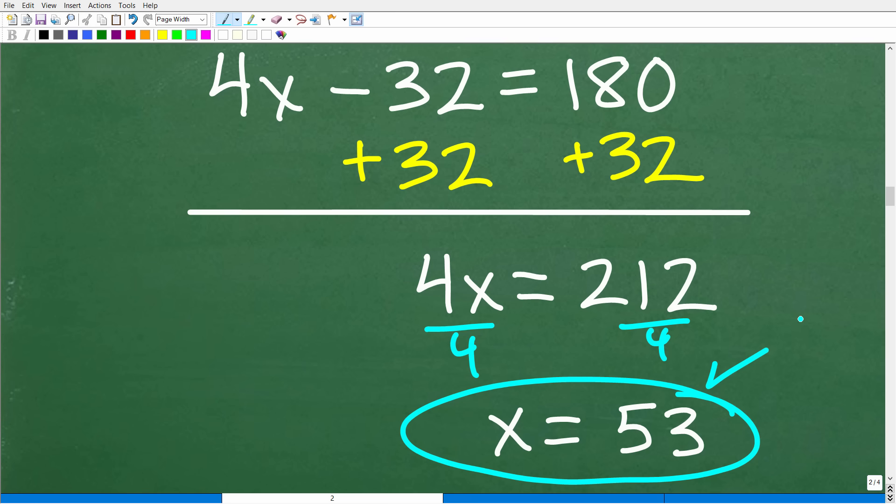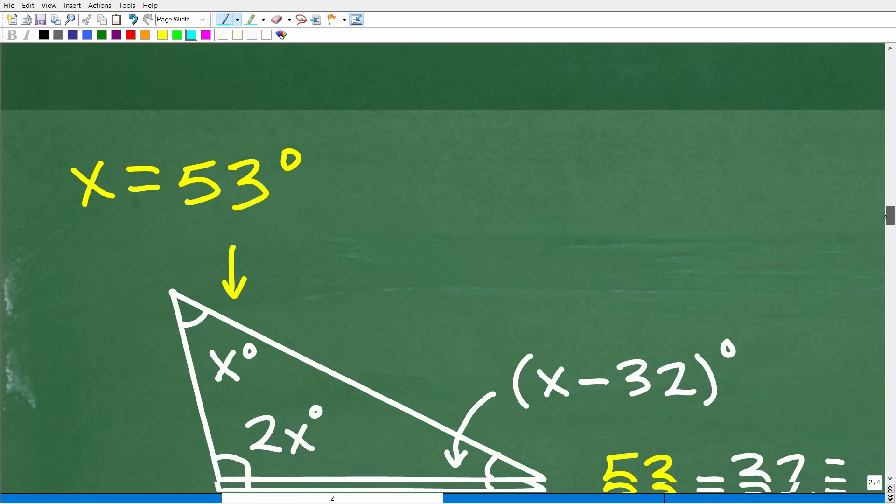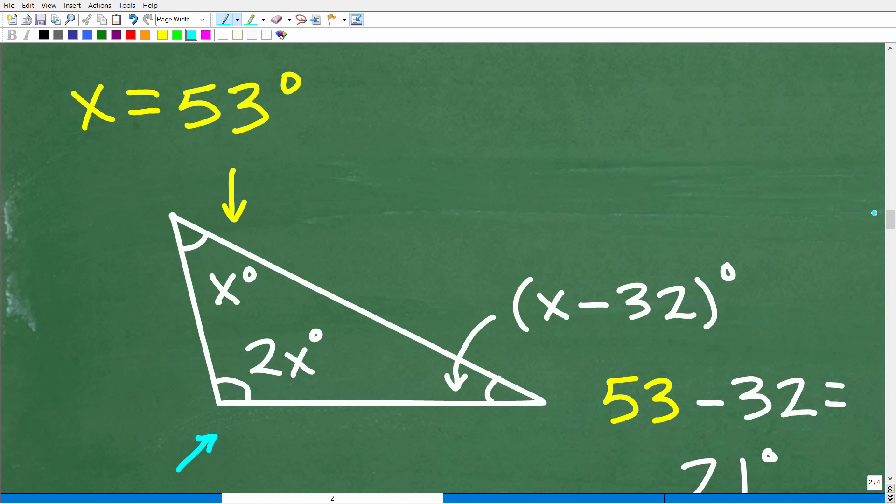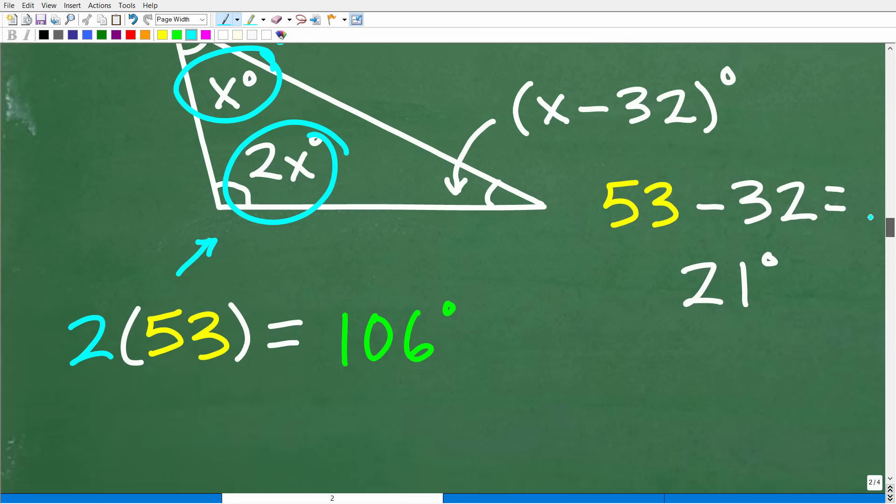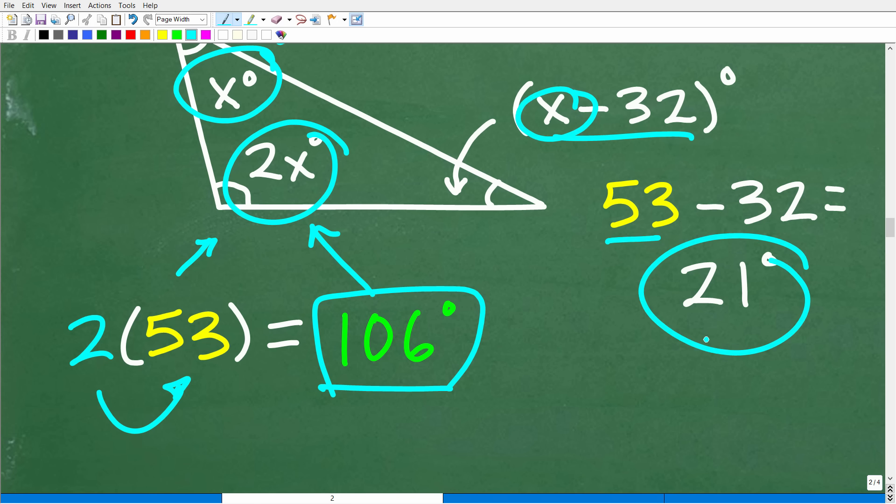But we don't stop here, right? So the question is, what are the angles of this triangle? So we have to go back to our lovely picture of this triangle and say, okay, x is 53 degrees. So this angle here is x, so this angle right here is in fact 53 degrees. Well, this angle here is 2x. So how do we calculate that? Well, easy, just take 2, multiply it by what x is, which now is 53 degrees. So this is 106 degrees. And then of course to find this angle, x minus 32 degrees, we know what x is. That is 53 minus 32. That's 121 degrees. I'm sorry, 21 degrees.